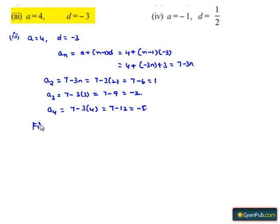Therefore the first four terms of AP with the given parameters are 4, 1, minus 2, minus 5.